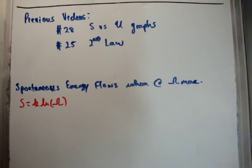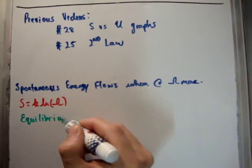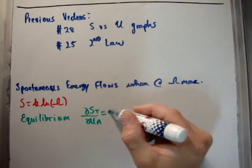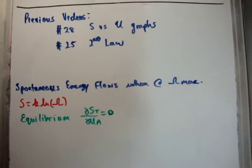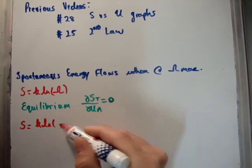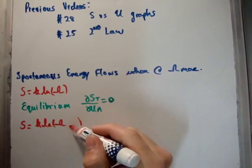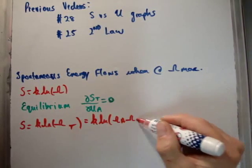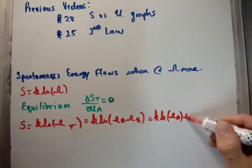In the video where I discussed entropy versus energy graphs, we saw that two systems are in equilibrium when ∂S_total/∂U_a is equal to zero. Now the total entropy is k times the natural logarithm of omega max, or more generally k times the natural logarithm of the product of their multiplicities. Due to logarithmic identities, that becomes k times the natural logarithm of omega_a plus k times the natural logarithm of omega_b.